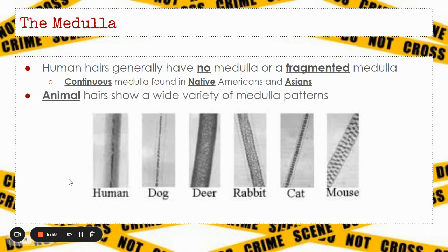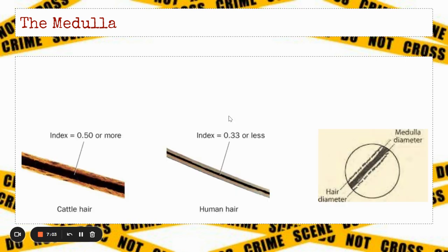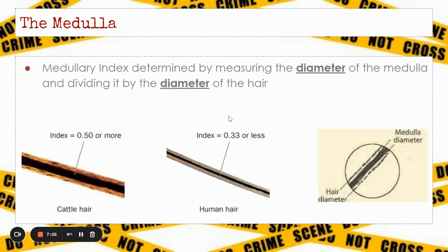Animal hairs show a very wide variety of medulla patterns. The medullary index is determined by measuring the diameter of the medulla and dividing it by the diameter of the hair. The medullary index gives us an indication of whether it's a human or not.